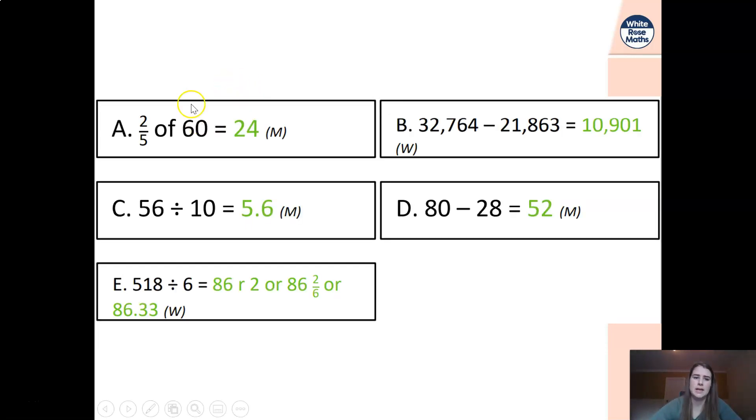Two-fifths of 60 is 24. 60 divided by the denominator multiplied by the numerator. Remember that for today. B, the answer is 10,901. C is 5.6, you should know this, we've done a lot of dividing by 10,000 this week. D is 52. And E, multiple answers, I guarantee you some of you have done probably every single one of these answers. Either 86 remainder 2, 86 and 2 sixths, or if you did a recurring decimal, would have been 86.33. That's a mean one. Don't usually give you one's with remainders, but I thought why not? So well done if you've got all five of those correct. They were a hard bunch for today. If you've got anything wrong though, go back and double-check where it is that you went wrong so that you know for next time.